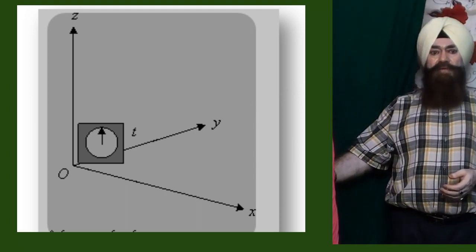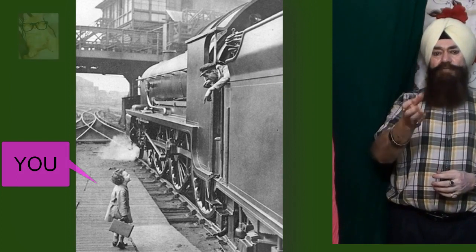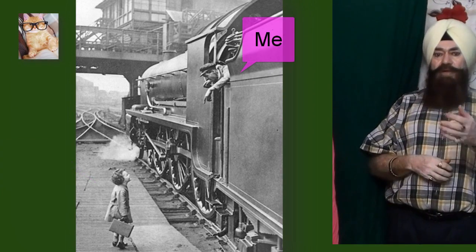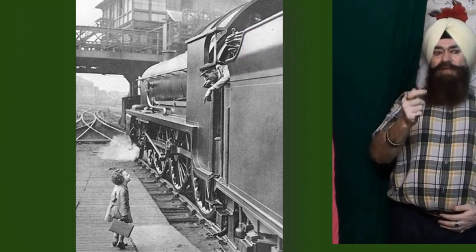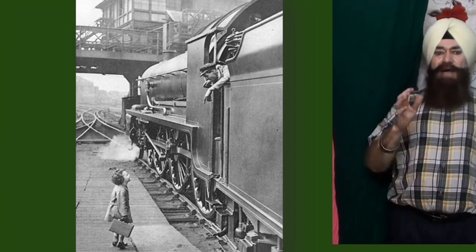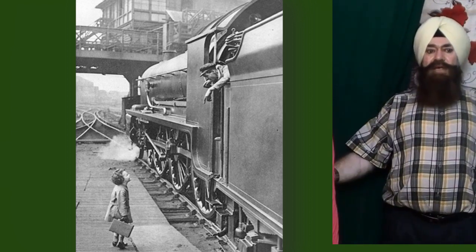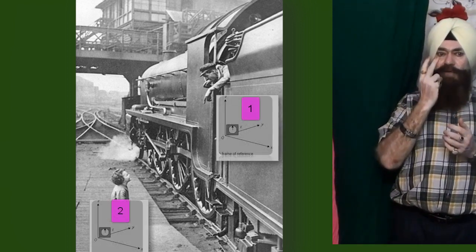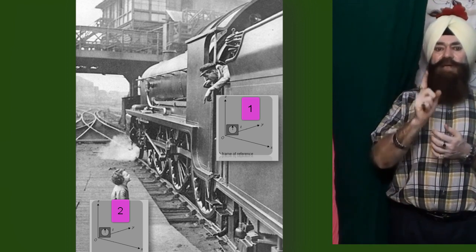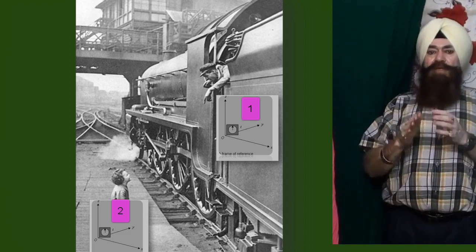Consider for example, you are standing on a railway platform and you are waiting for my arrival. You see my train is arriving at the station and I am waving my hand. So in this case, we consider two reference frames: one is the platform and the other is the moving train.